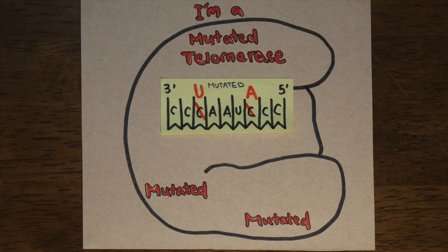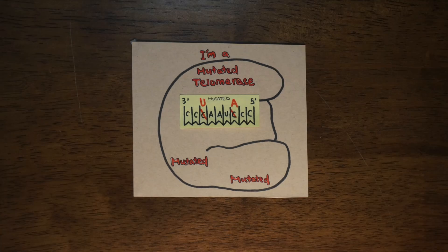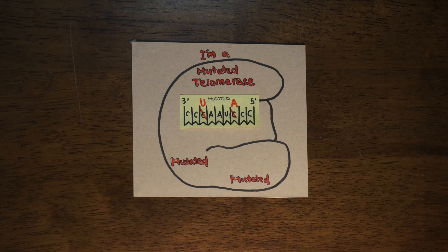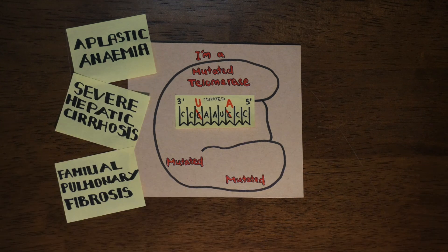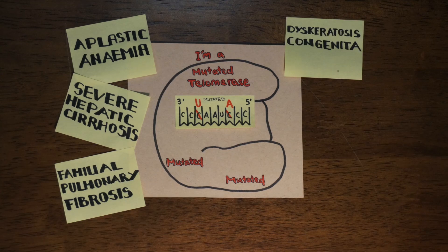Mutations in telomerase and the RNA primer used by telomerase to extend telomeres are a genetic risk factor for the development of disease and is found in patients with varied pathologies, such as aplastic anemia, severe hepatic cirrhosis, and familial pulmonary fibrosis.